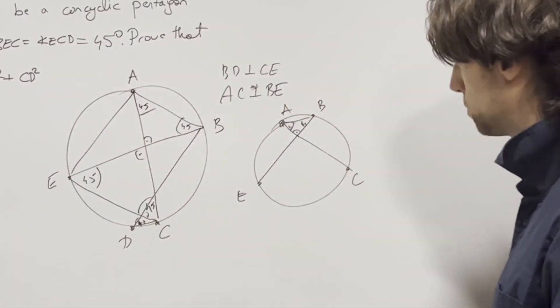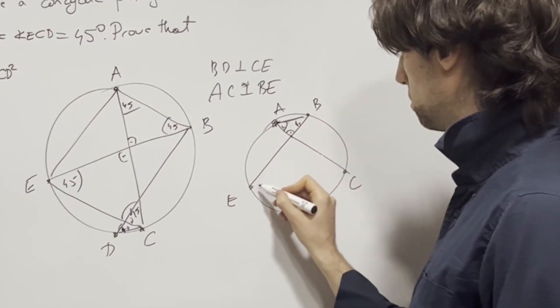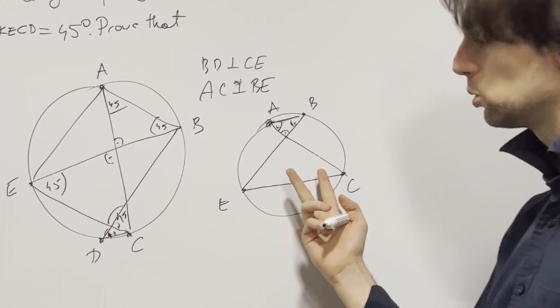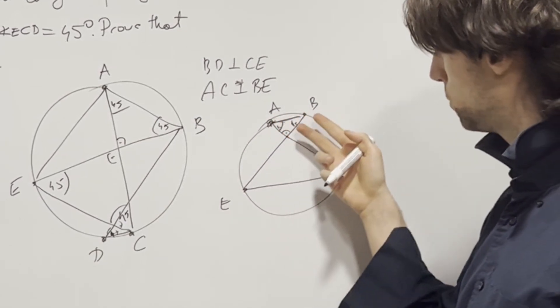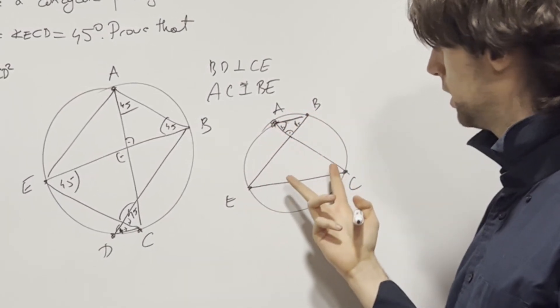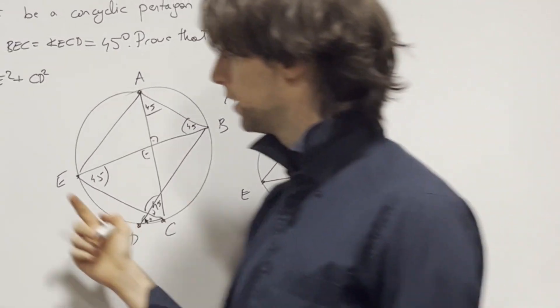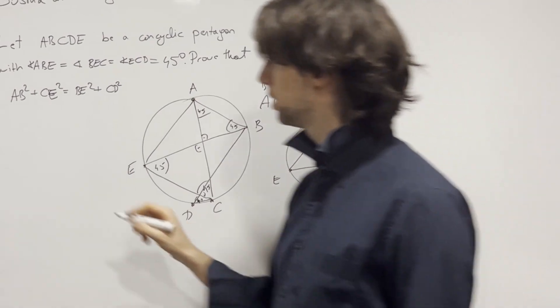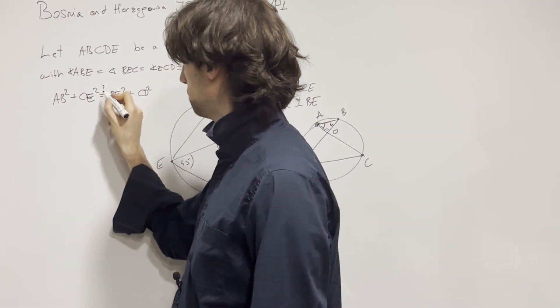AB squared plus CE squared. So it's this squared plus this squared. And the sum of these two squares, this squared is equal to this squared plus this squared. This squared is equal to this squared plus this squared. So we can have, call this intersection point O.